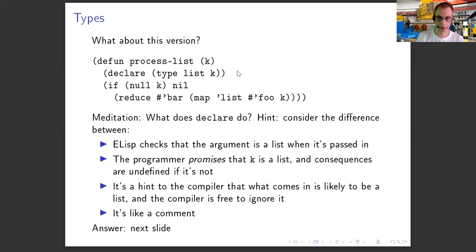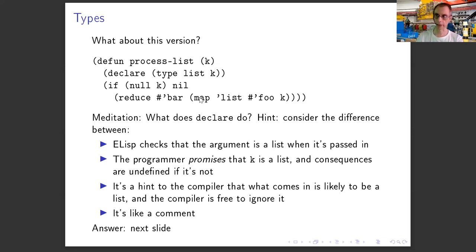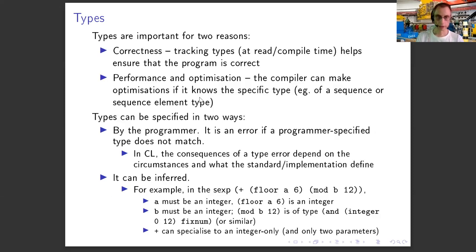For example, if you look at `reduce` or `map`, they generally take sequences — vectors, strings, and lists. But if I know the type I pass in is a list, then the compiler can optimize and throw away the code that handles vectors or strings. It knows K is not a vector or string, so it can call the list-handling path of map or reduce directly, without checking what kind of sequence it is at runtime.